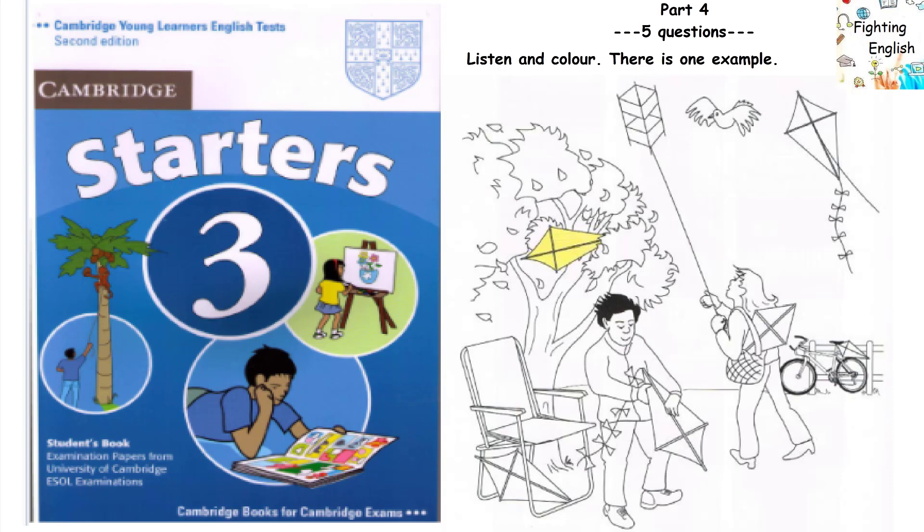4. Can you see the bicycle in the picture? Yes, it's behind the girl. There's a kite on the bicycle. Can I colour that kite brown? Brown? Well, OK then.